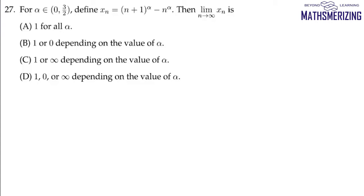Question number 27: For alpha belongs to (0, 3/2), define xn as (n+1)^alpha minus n^alpha. We need to find the limit as n tends to infinity of xn.